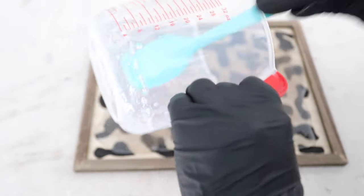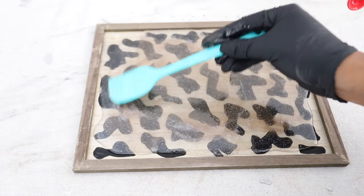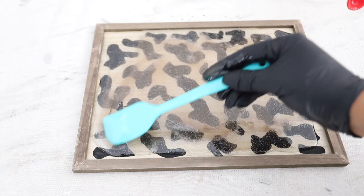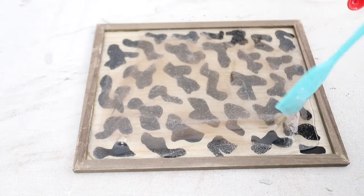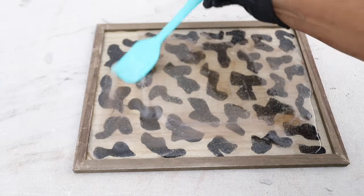But if you need a recommendation, I'll put the link to one that I have used several times in the description box below. To spread out the resin, I'm going to use a silicone spatula. I like using this type of spatula because resin does not stick to it. All you have to do is let the resin dry and then you can peel it away.